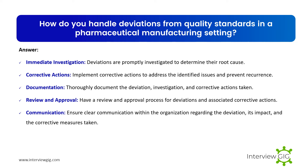How do you handle deviations from quality standards in a pharmaceutical manufacturing setting? Deviations are promptly investigated to determine their root cause. Corrective actions are implemented to address the identified issues and prevent recurrence. The deviation, investigation, and corrective actions taken are thoroughly documented. A review and approval process is conducted for deviations and associated corrective actions. Clear communication is ensured within the organization regarding the deviation, its impact, and the corrective measures taken.